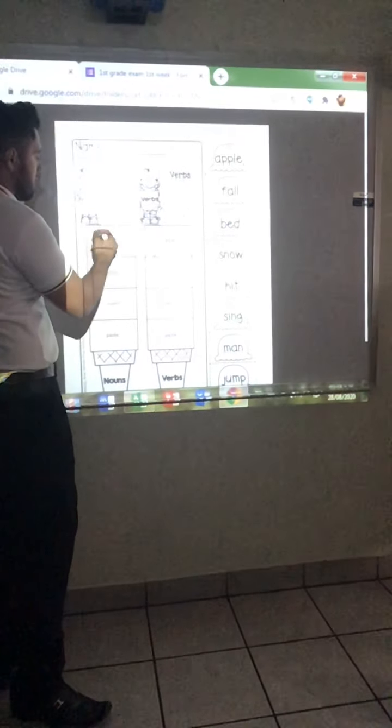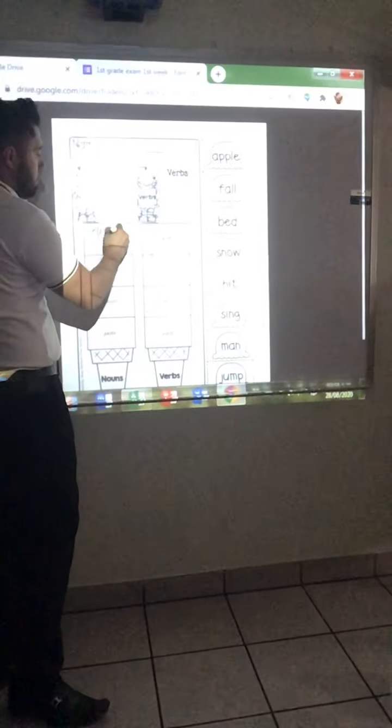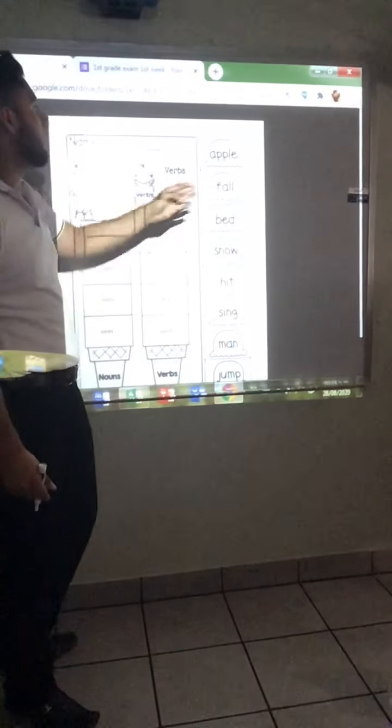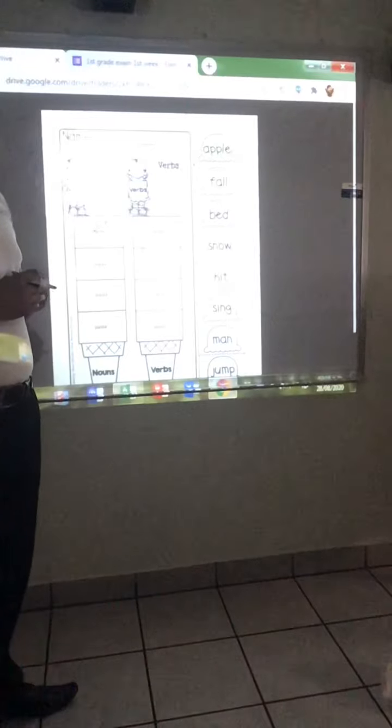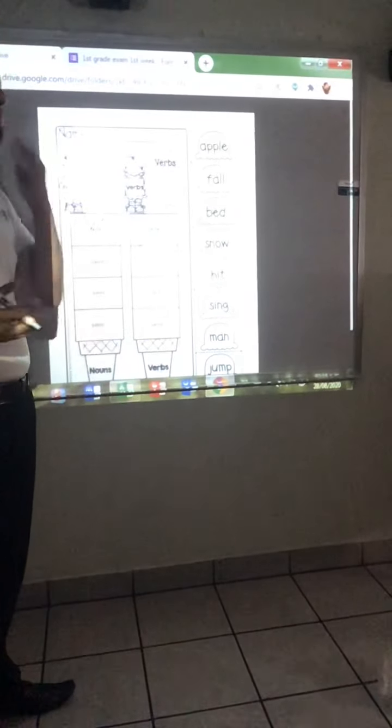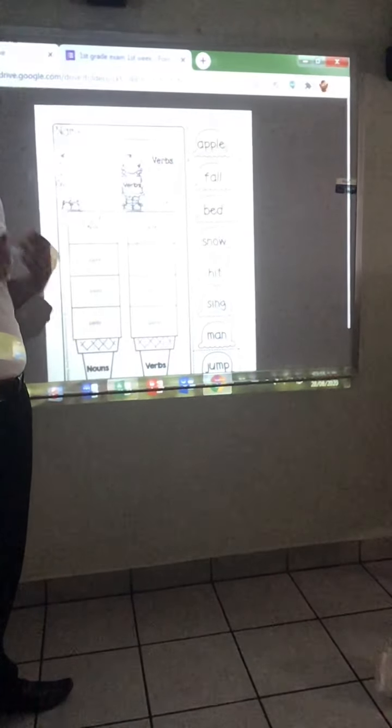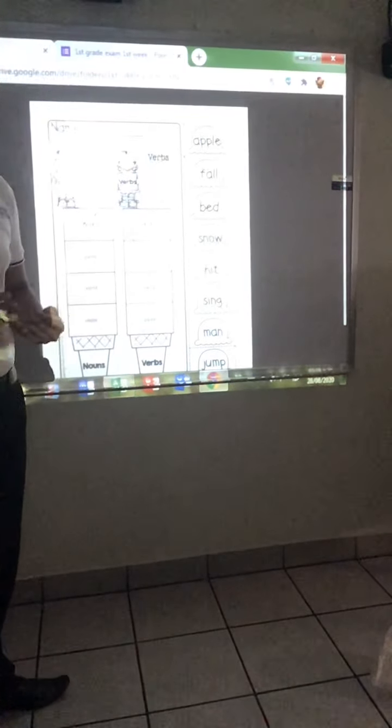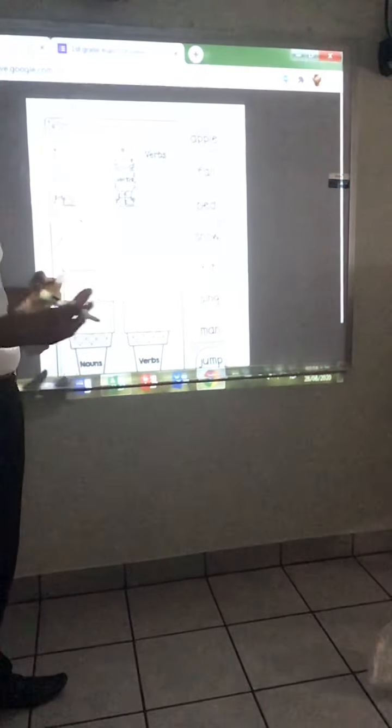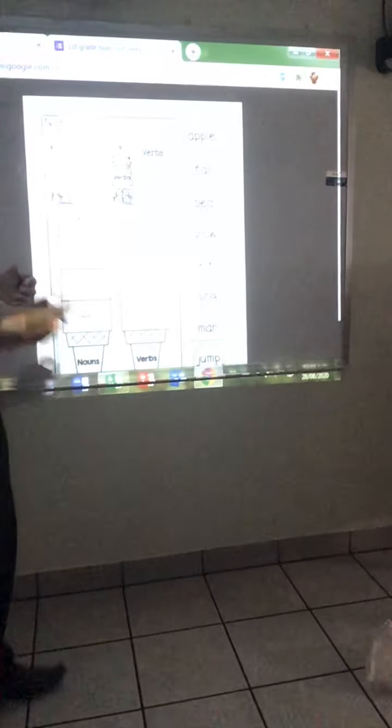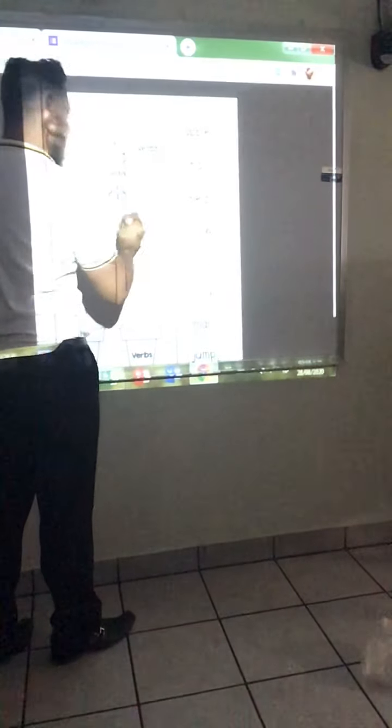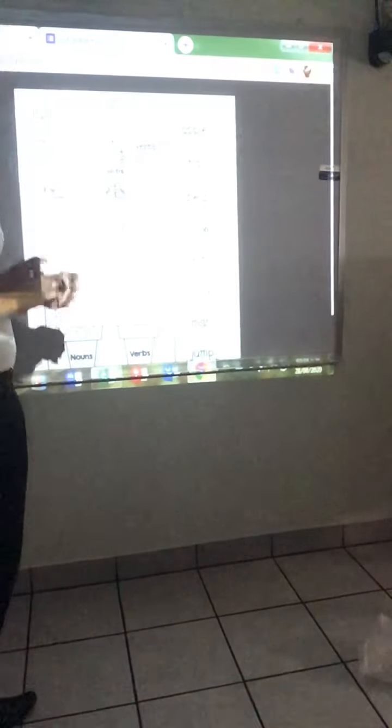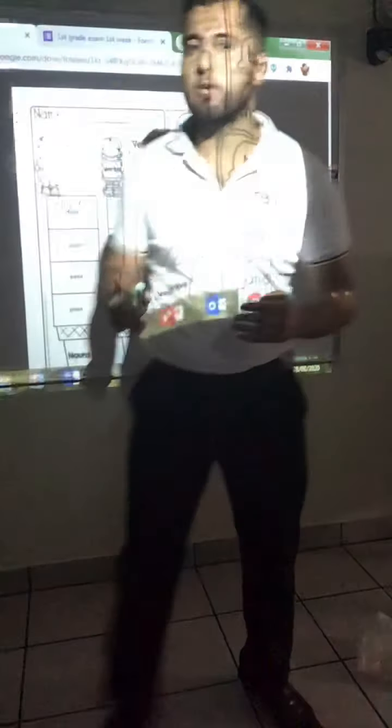Apple goes here. Then we have fall. Now fall can be like the season fall, but it's not that in this case. Fall, for example, if I walk towards the cliff I will fall. So this is a verb. Fall is the verb.